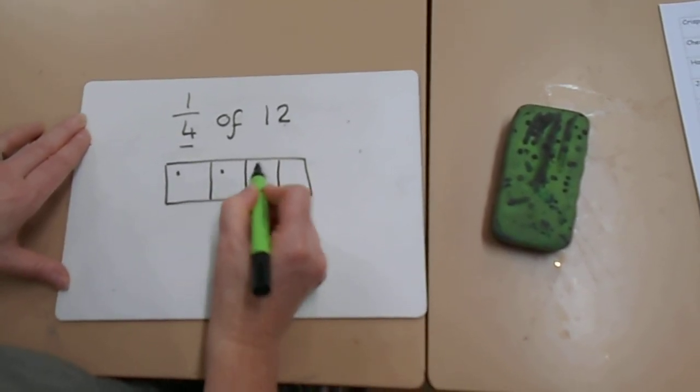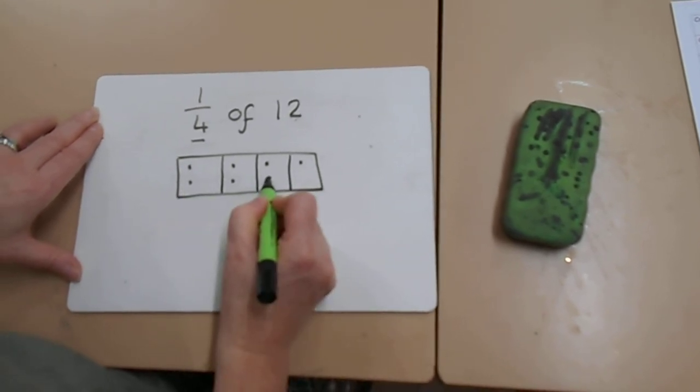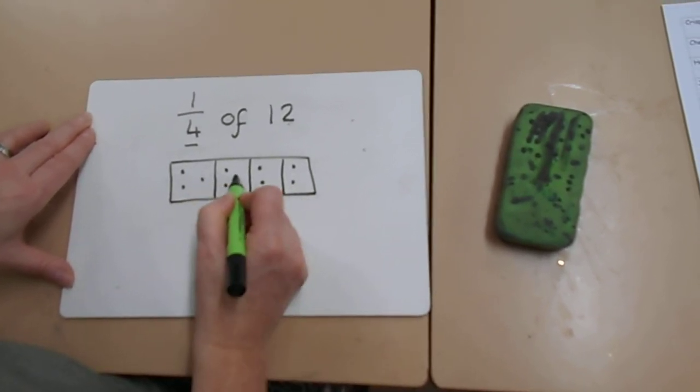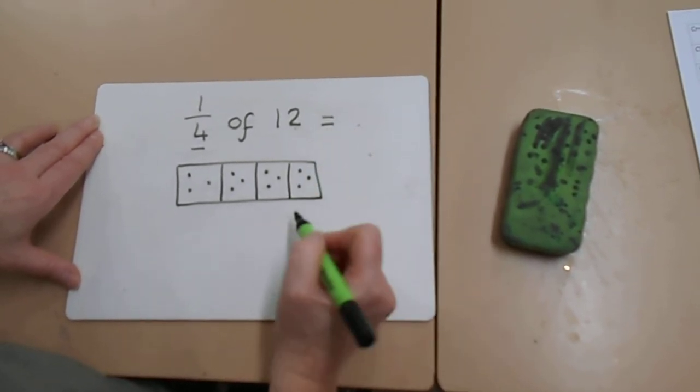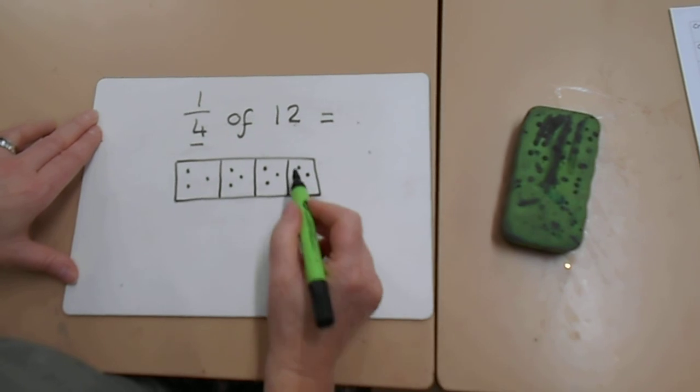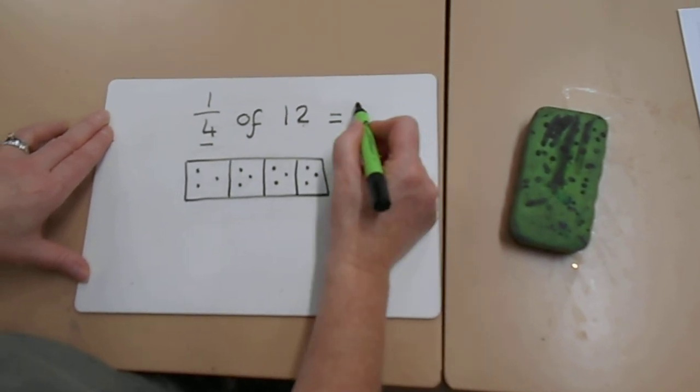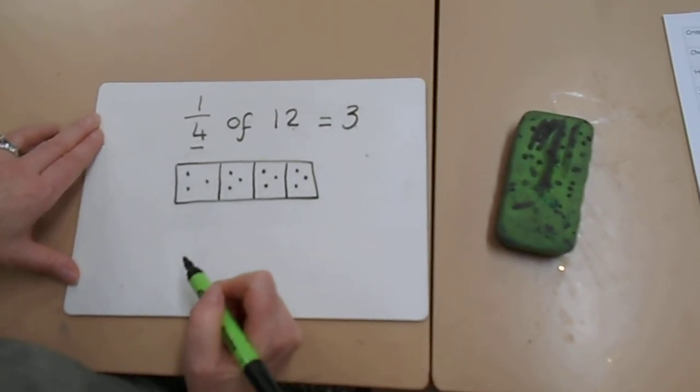1, 2, 3, 4, 5, 6, 7, 8, 9, 10, 11, 12. Then, how many dots in each section? 1, 2, 3. So a quarter of 12 equals 3.